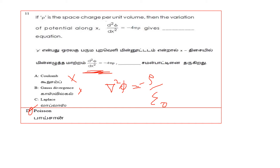Differentiating these values, we get the answer undoubtedly as Poisson's equation. Option D — Poisson's equation — is the correct answer. Note that Laplace's equation would give del²φ = 0, whereas here we have a source term, confirming Poisson.